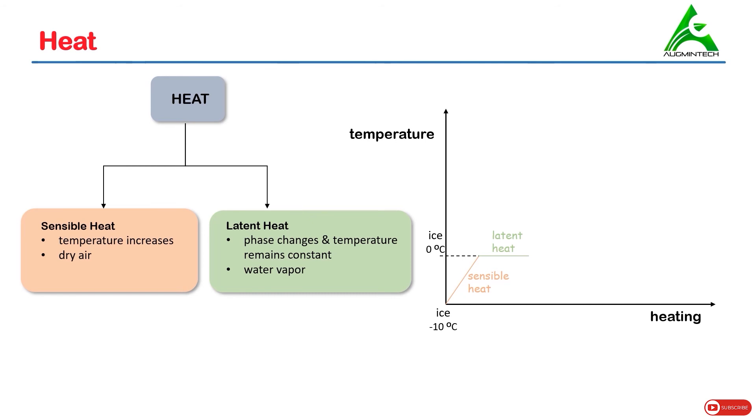Once ice is completely melted into water, on supplying continuous heat, its temperature increases again and phase remains constant up to a value of 100 degrees centigrade. So this process is known as sensible heating because the temperature changes.